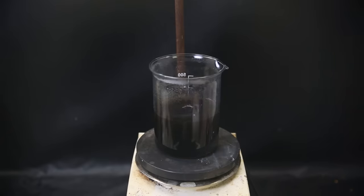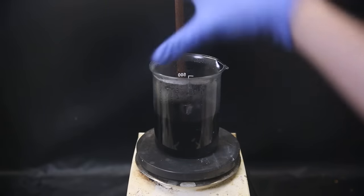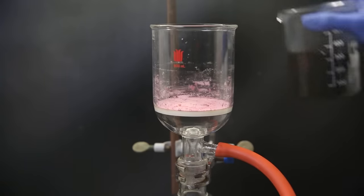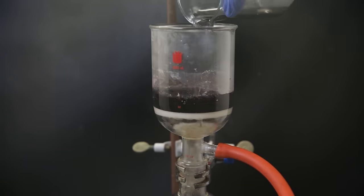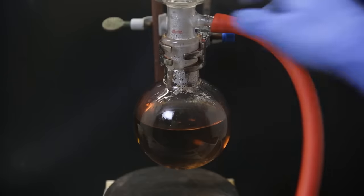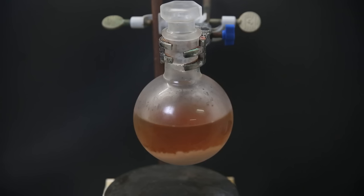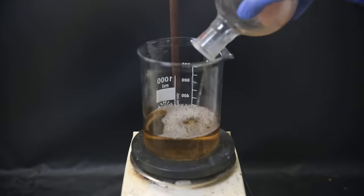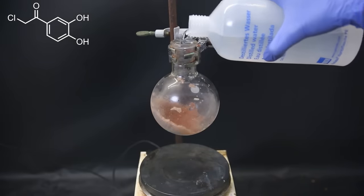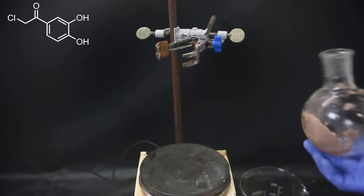I let it stir for a few minutes, though it's best to do it a bit longer, but again, impatience. I then filter it through the same filter because I don't feel like cleaning that. The filtrate looks the same. I then let it sit in the fridge overnight and a bunch of solid has crystallized out. I decant off all of the liquid and wash the solid with some water to get rid of the acid.